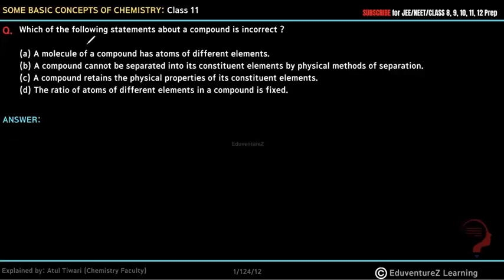Hello everyone, which of the following statements about a compound is incorrect? (a) A molecule of a compound has atoms of different elements. (b) A compound cannot be separated into its constituent elements by physical methods of separation. (c) A compound retains the physical properties of its constituent elements. (d) The ratio of atoms of different elements in a compound is fixed.